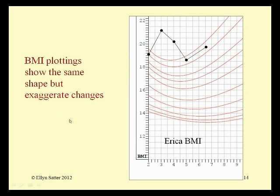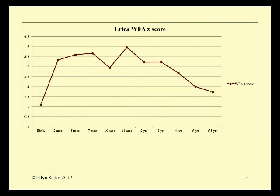BMI plotting shows the same shape and exaggerates the changes. For a child whose growth plots beyond the standard percentiles, it's very helpful to plot Z-scores or standard deviations. I discussed Z-scores in both the article I gave you and in Chapter 10 of Your Child's Weight. This zero point is the 50th percentile. One Z-score is about the 85th percentile, and a Z-score of two to two and a half is around the 95th to 97th percentile. So we can see that Erica was a big girl.